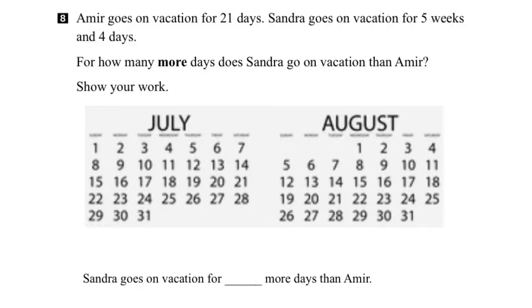We'll use yellow for Amir. He would start on July 1st and then have 21 days: 1, 2, 3, 4, 5, 6, 7, 8, 9, 10, 11, 12, 13, 14, 15, 16, 17, 18, 19, 20, 21 days.